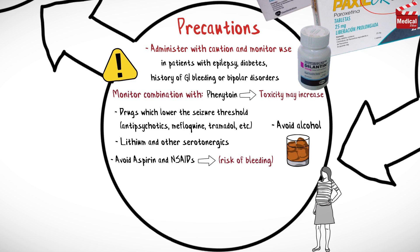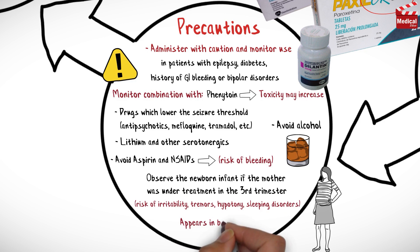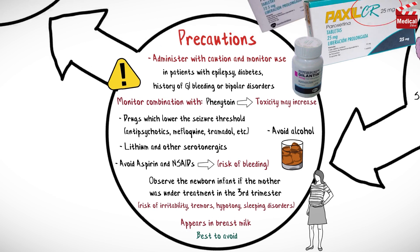In pregnancy, reevaluate whether treatment is still necessary. If continued, observe the newborn infant, as use in the third trimester may cause risk of irritability, tremors, hypotonia, and sleeping disorders. Paroxetine appears in breast milk, so it is best to avoid; the American Academy of Pediatrics expresses concern with its use during breastfeeding.